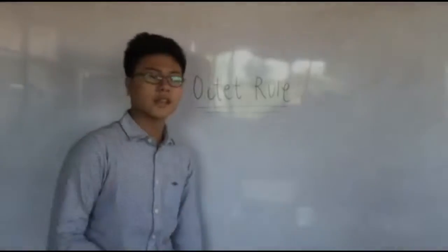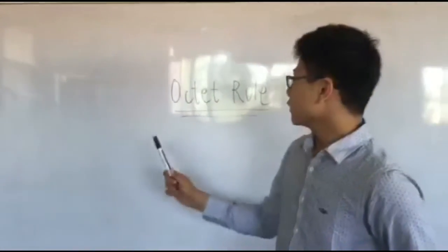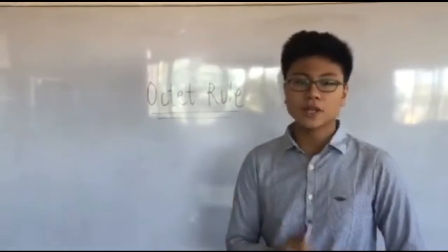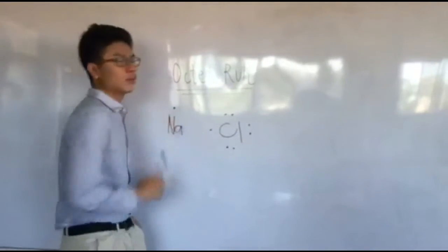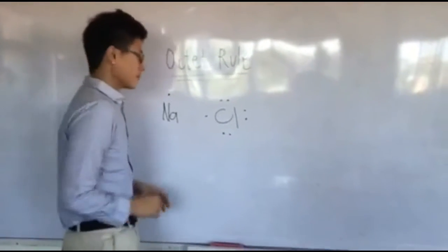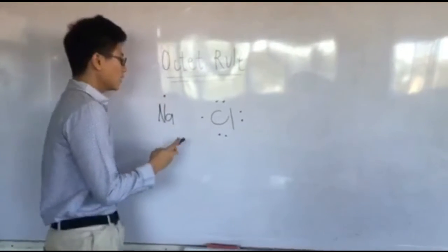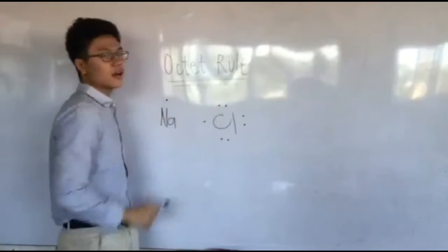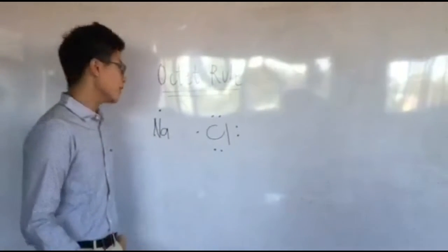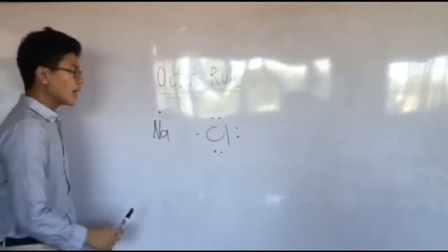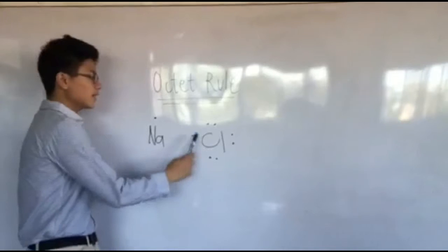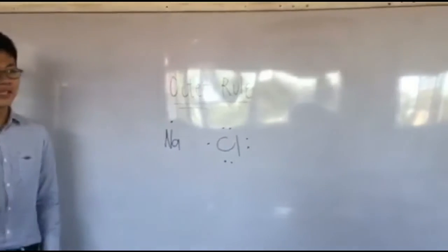Octet rule states that we need eight total electrons in the outer shell or valence of an atom for it to be stable. To explain the octet rule, we will use Lewis dot structures of the elements sodium and chlorine. Since sodium is on the first column of the periodic table, its valence electrons are one. While chlorine, since it is on the seventh column of the periodic table, it has seven total electrons on its outer shell.